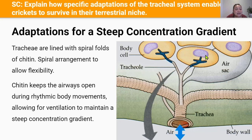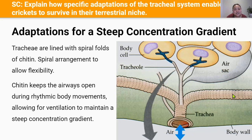The second adaptation for maintaining a steep concentration gradient is chitin rings, depicted in images as dotted lines around the tracheals. Tracheals are lined with a spiral fold of chitin rings which keep them open, allowing ventilation to maintain a steep concentration gradient. Chitin is arranged in a spiral to allow flexibility and bendiness needed during flight and rhythmic body movements. Without chitin, external forces like gravity and rhythmic body movements would compress the tracheal tubes and prevent airflow and ventilation.